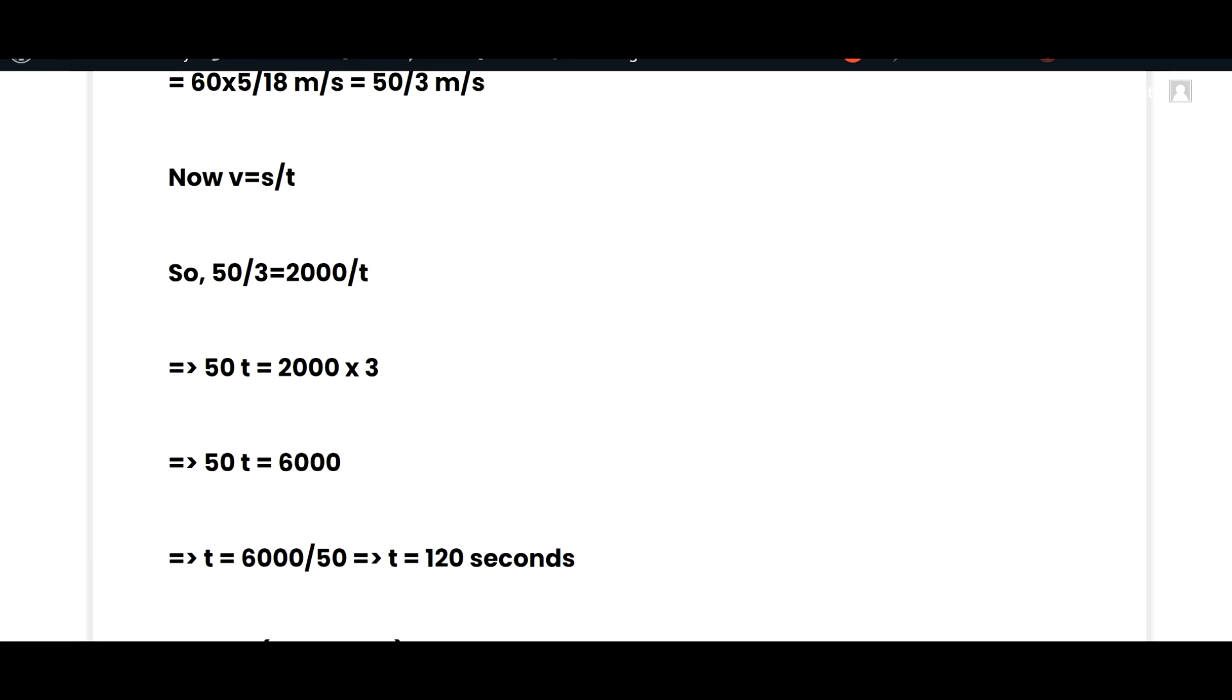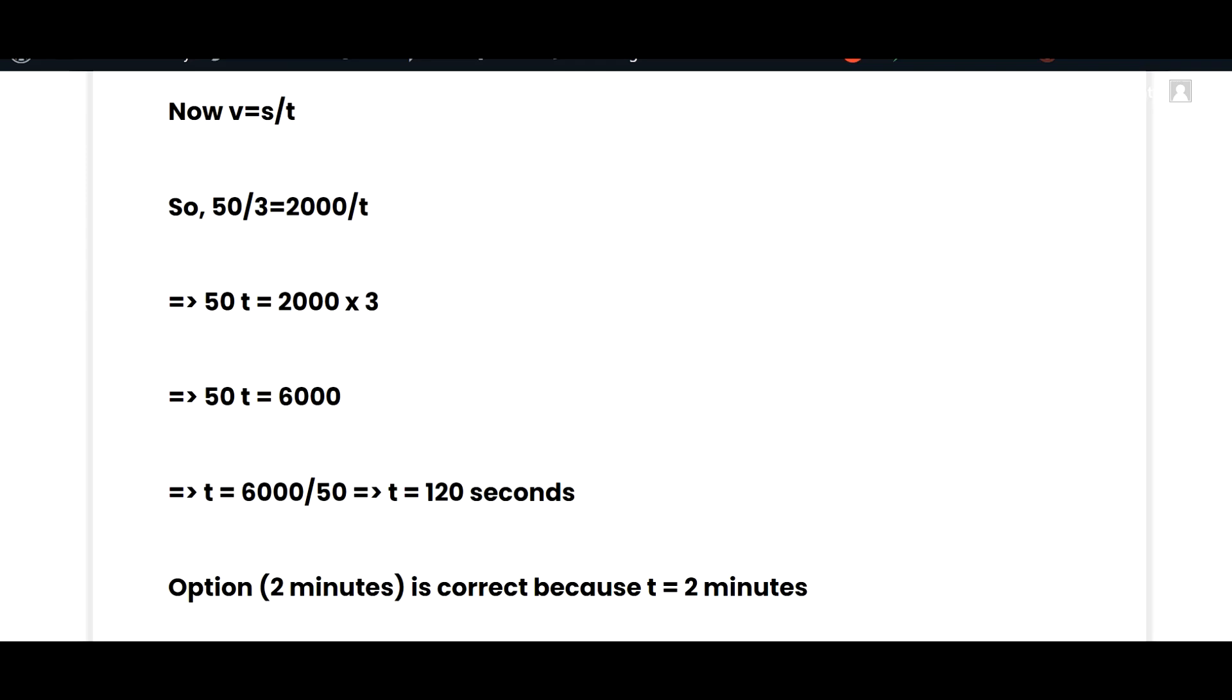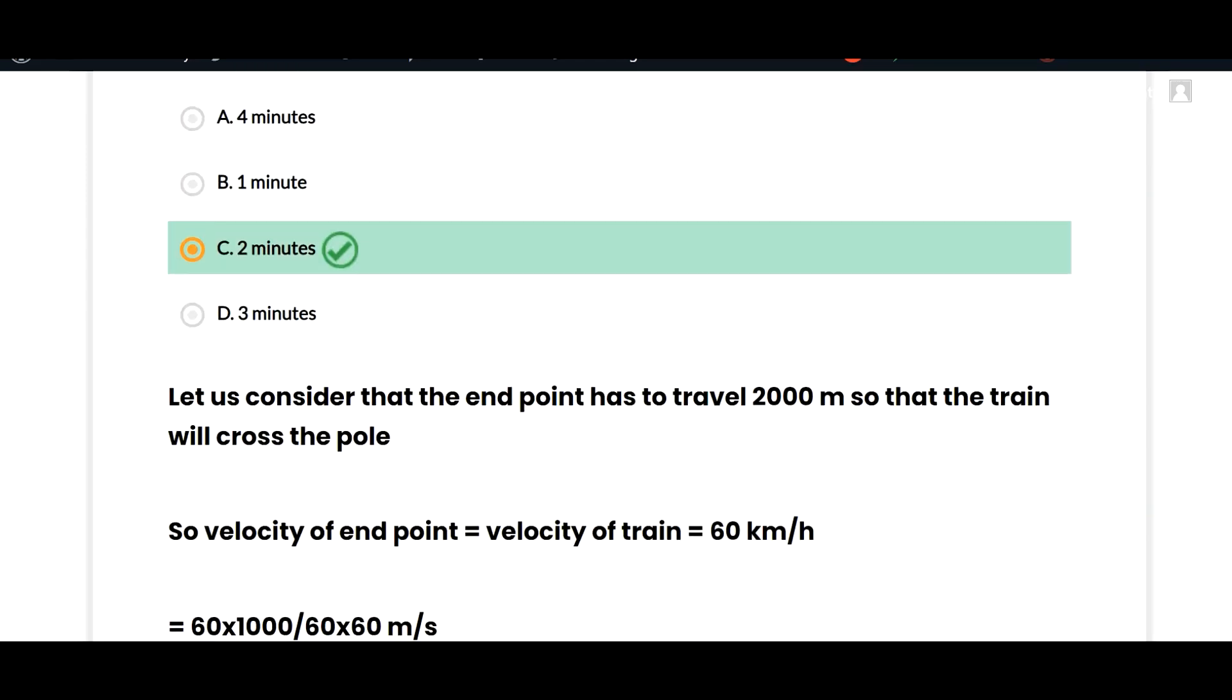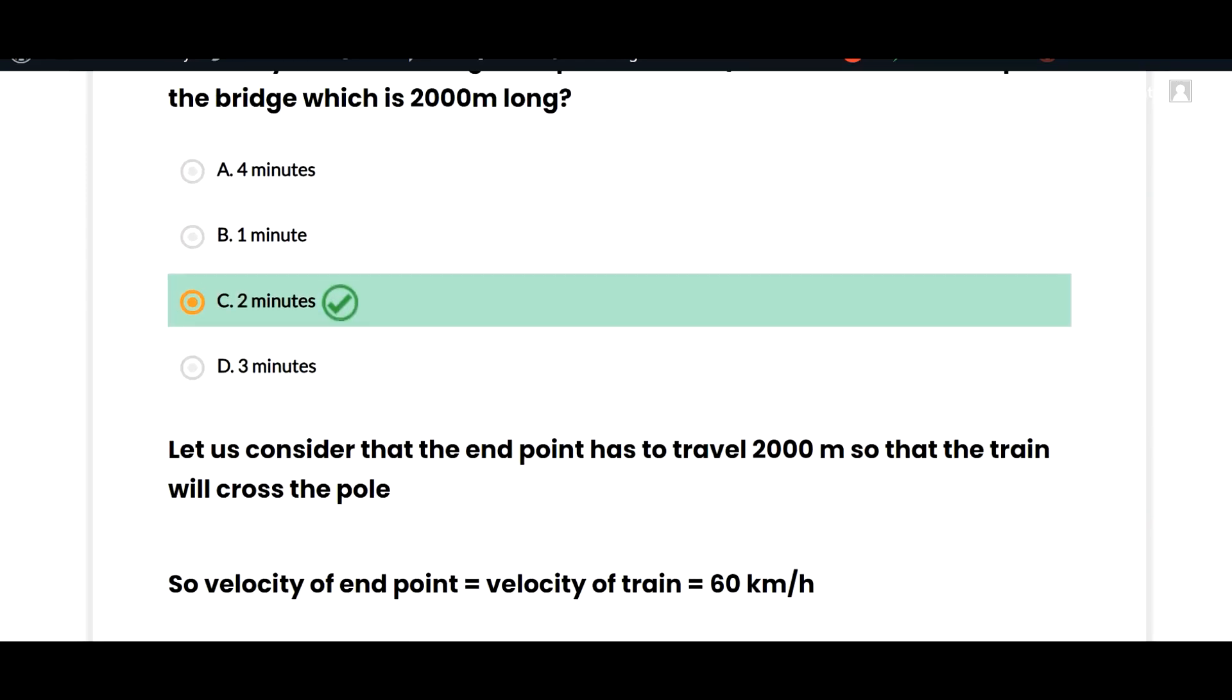Velocity equals distance over time, so 50 by 3 equals 2000 over t. Solving this, we get t equals 120 seconds. But in these MCQs, seconds are not given, only minutes are given.